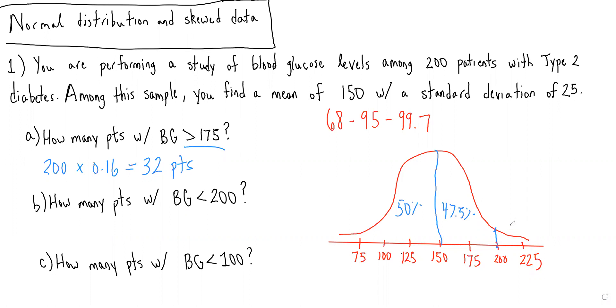And therefore, we know that 97.5% of our data should fall to the left of a value of 200 for the blood glucose. So you do 200 times 0.975, which is equal to 195 patients.